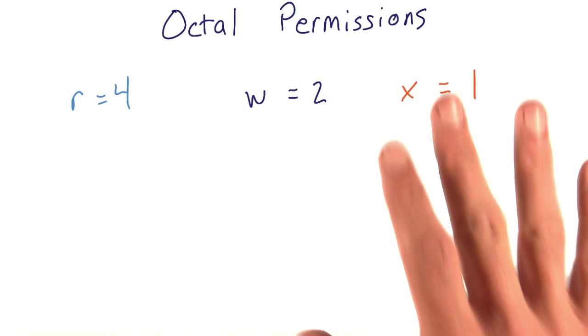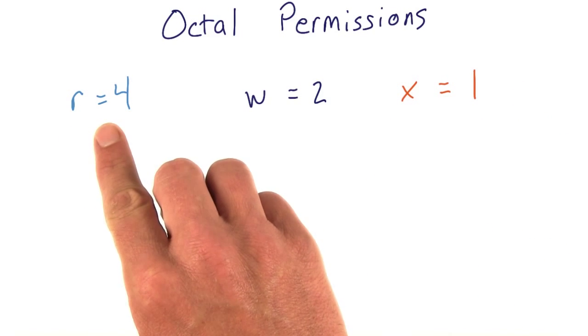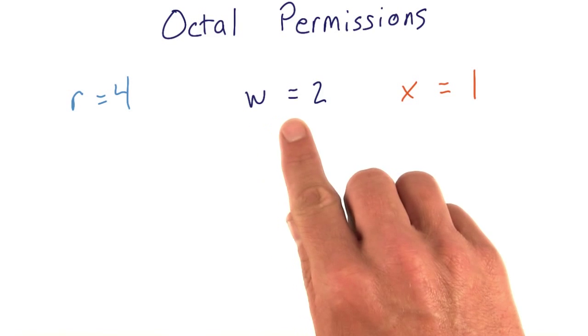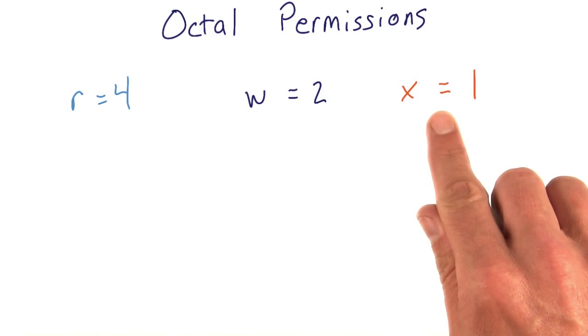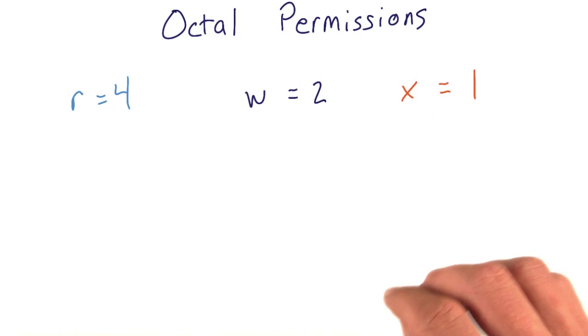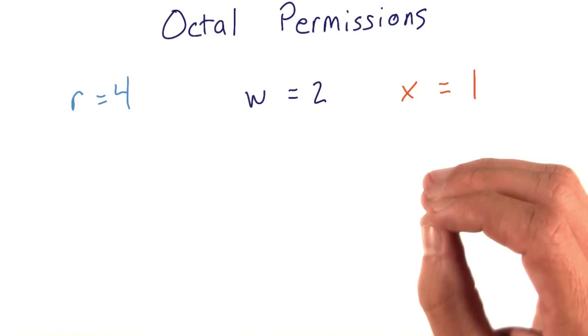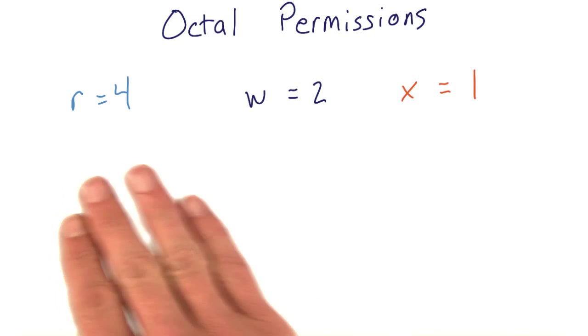We can translate these values as follows. r's are equal to 4, w's are equal to 2, x's are equal to 1, and if we don't want any permissions, that'll be a 0. By adding the numbers together, we end up with a result identifying the full set of permissions to apply.